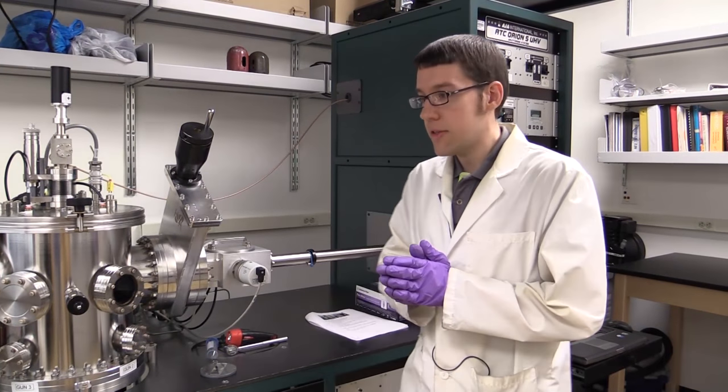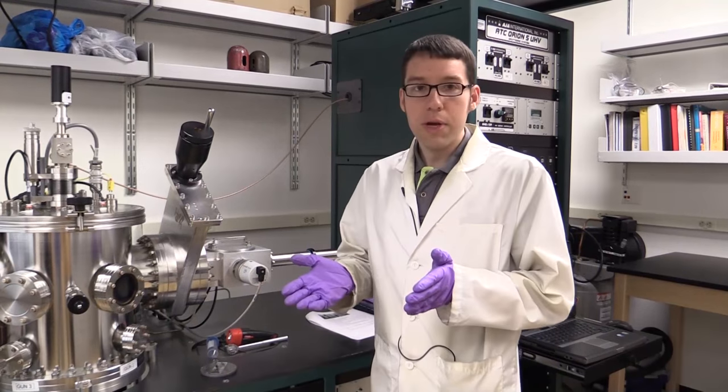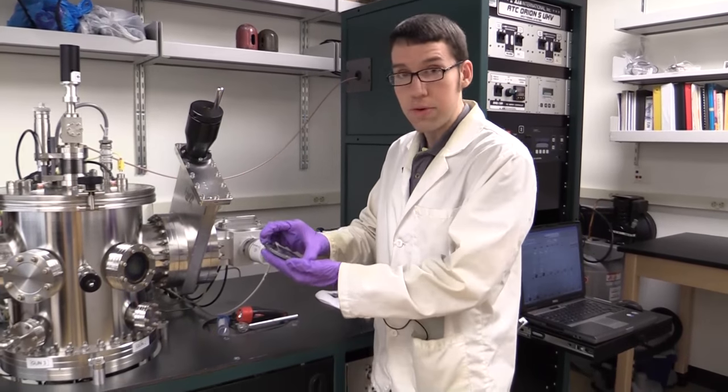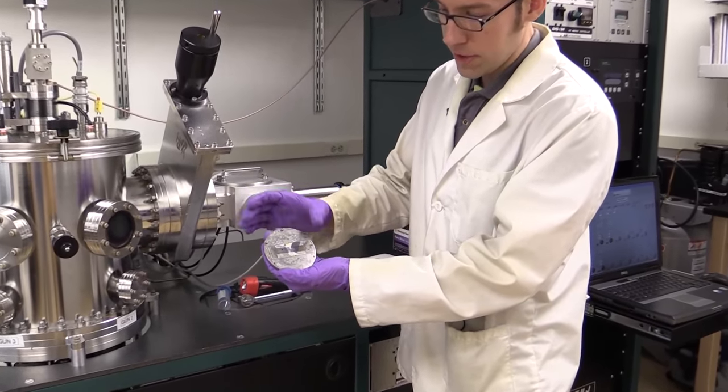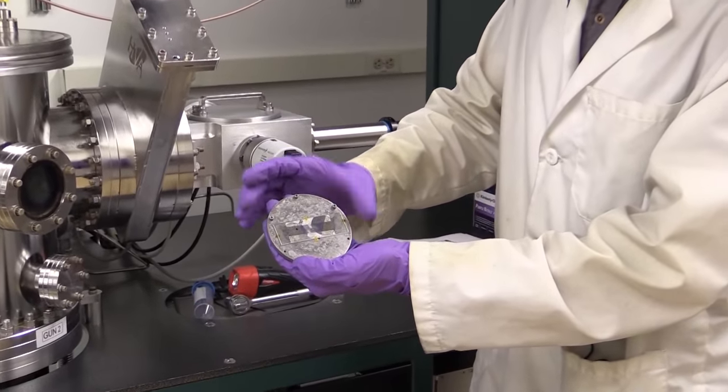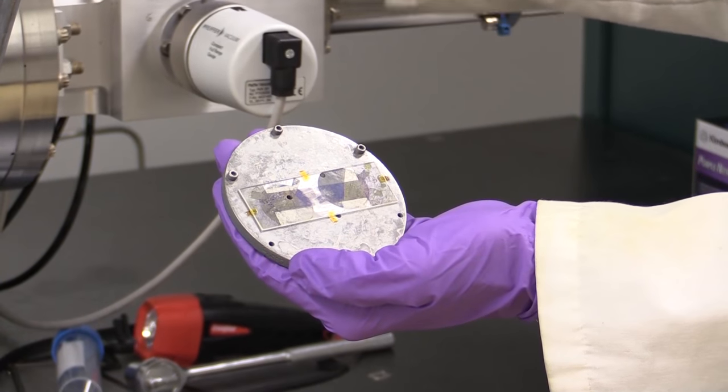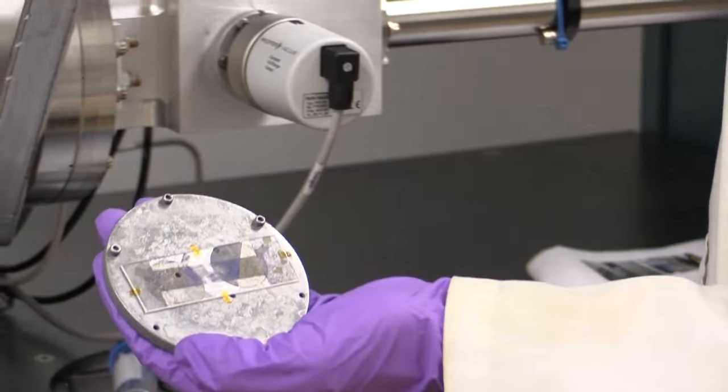So we'll get started with the sputtering process. The first thing we need to do for magnetron sputtering is clean a substrate and mount it on our substrate holder, which I've already done here for the purpose of saving time. Next, we'll load it in the load lock chamber and then move it to the main chamber where we do the deposition process.